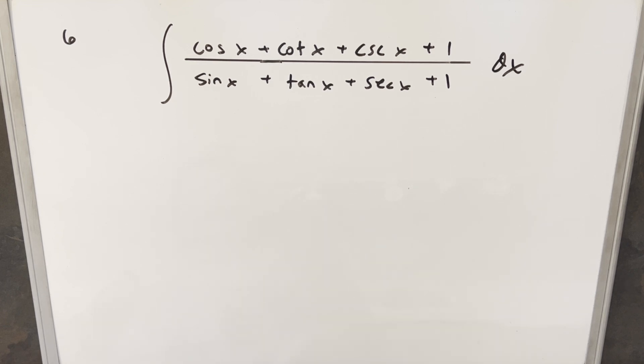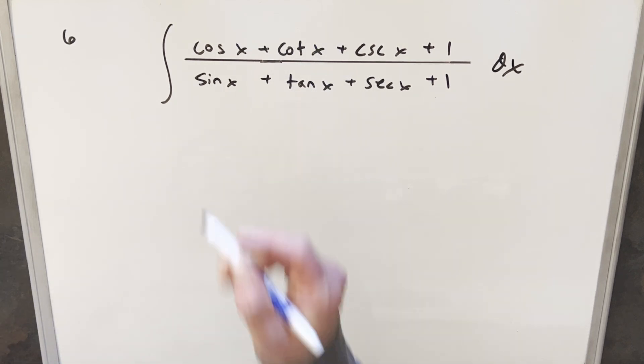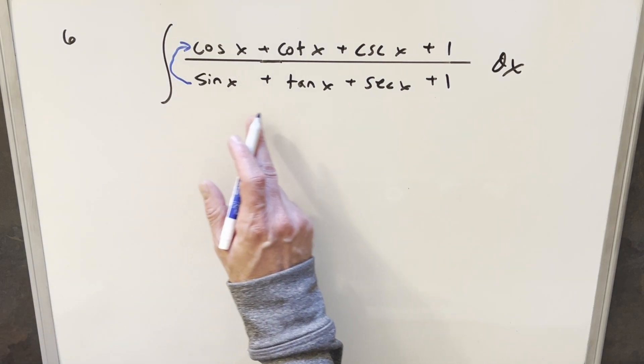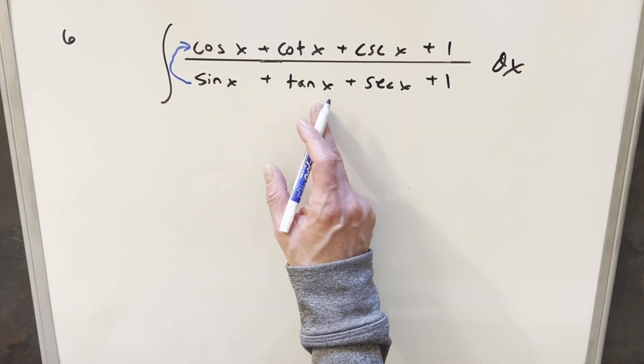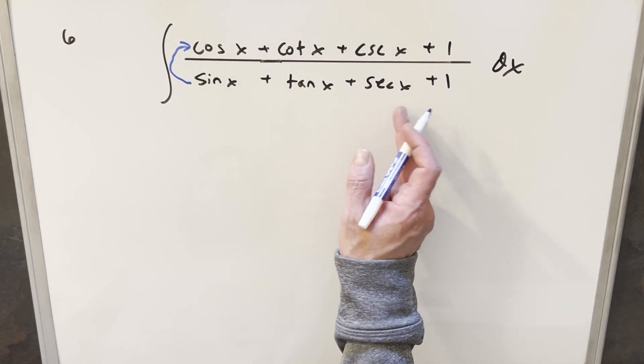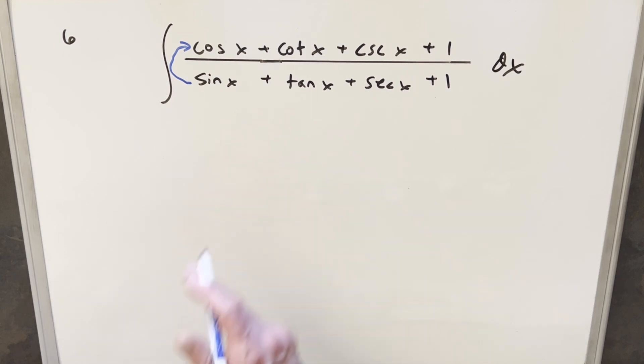Okay, to get started with this, at first I was thinking maybe a u substitution was possible because we've got the same number of terms in the denominator and numerator, and right away we can see the derivative of sine is cosine, so that's promising. But then we look for the derivative of other terms, like for tan x we have no secant squared x in the numerator. Secant x, we need secant x tan x. So I think a u substitution is not really going to work.